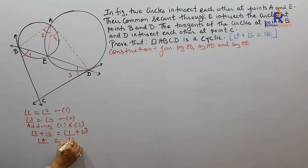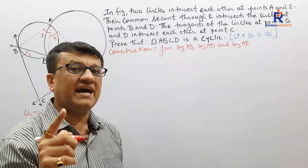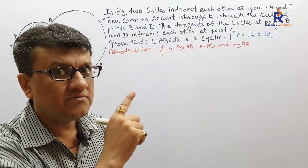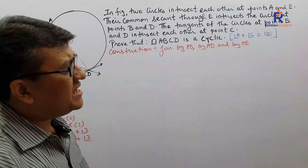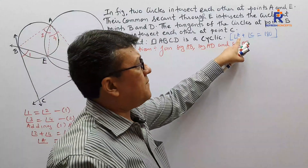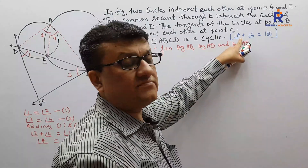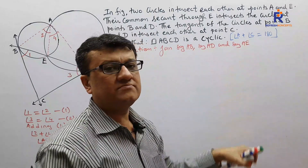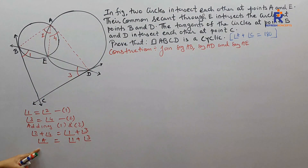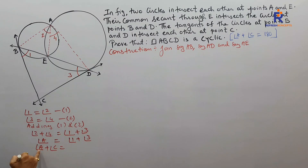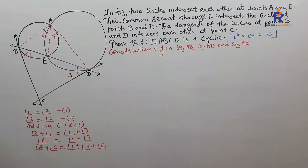Now once again I ask a question: what does the question want? The question answers me — I want angle A plus C also. Am I having plus C here? No. So I shall add plus C on both the sides. When I add plus C on both the sides, I get angle A plus angle C equals angle 1 plus angle 3 plus angle C.